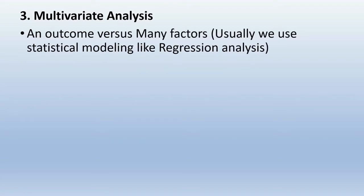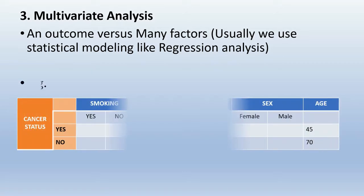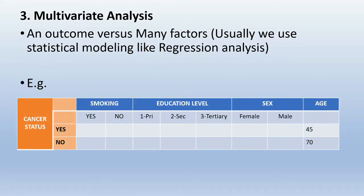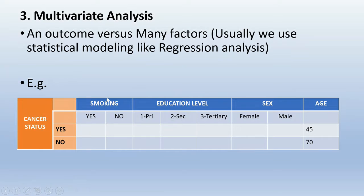In multivariate analysis — another level of analysis — we have one outcome versus many factors. Usually we use statistical modeling like regression analysis for this type of analysis. For example, we can have cancer as an outcome versus many variables such as smoking, education, status, sex, or age. Here we can't use one single statistical test, so we go with modeling like regression analysis.